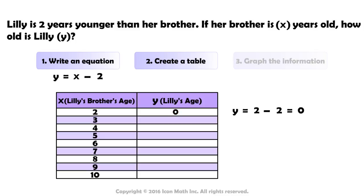When her brother is three, Lily will be three minus two or one year old. When her brother is four, how old will Lily be? That's right, she will be two. This pattern continues.